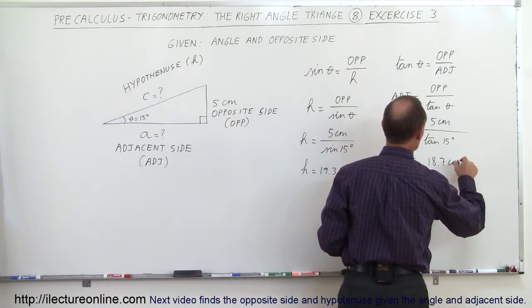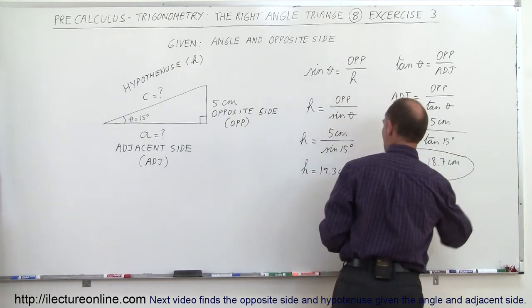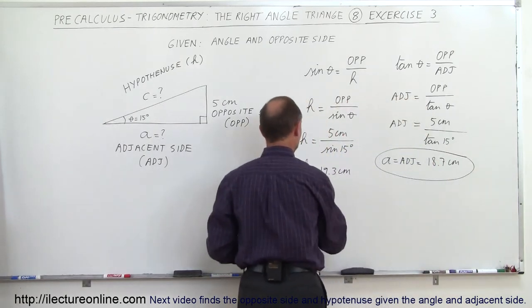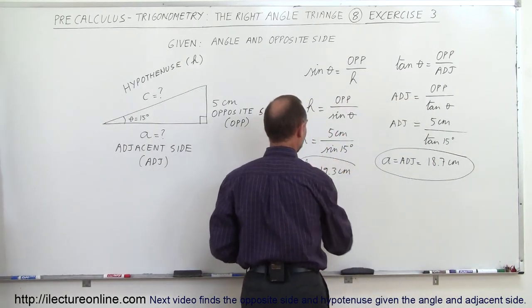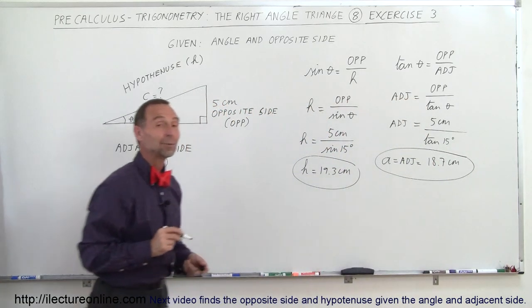So A, which is the adjacent side, equals 18.7 centimeters. And that's how we find A and that's how we find the hypotenuse.